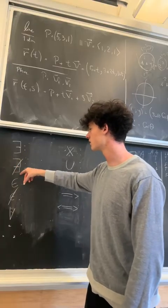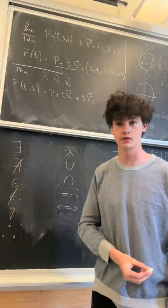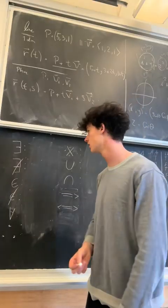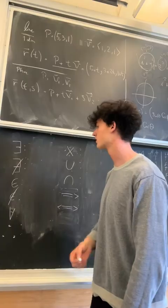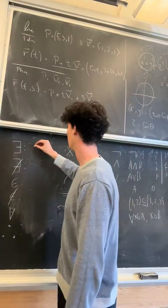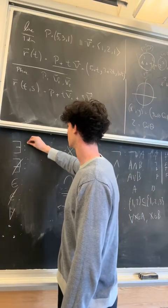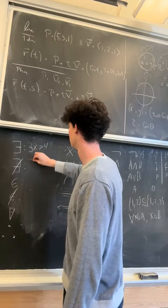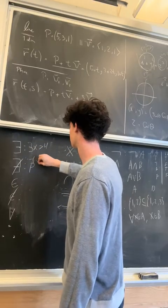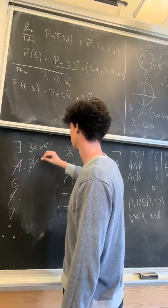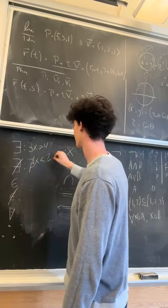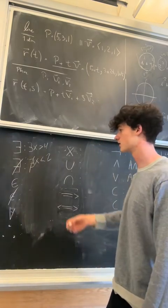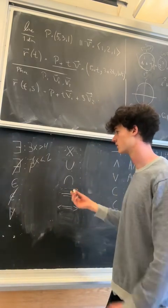With it crossed out, this next one, this just means there does not exist. So if you don't have something that exists, you just say there doesn't exist. So actually, we can write out examples, we can say like there exists an X greater than four here, or does not exist X less than two. It's just random statements. There exists, does not exist, you can use it however you want. That's what it means.